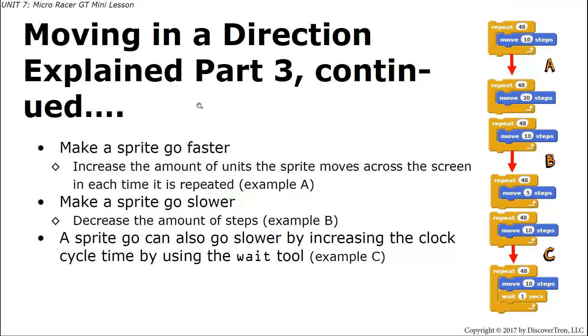To make a sprite go faster, there's a few different ways. You can increase the amount of units the sprite moves across the screen each time it is repeated. You can see this here in example A. This sprite technically moves 10 steps repeating 48 times. Then right here we speed it up by increasing the number of steps that it moves each time this repeats. That increases the speed right there. Another way, if you look at B, we can slow it down by decreasing the number of steps that the sprite moves with each loop. We're still repeating 48 times between these two, but this one now is taking 5 steps per loop as opposed to this one which was taking 10 steps per loop.